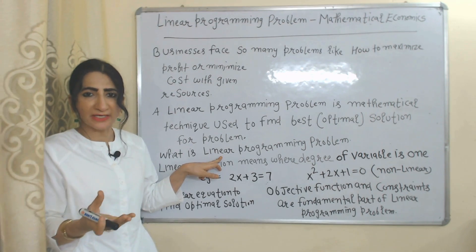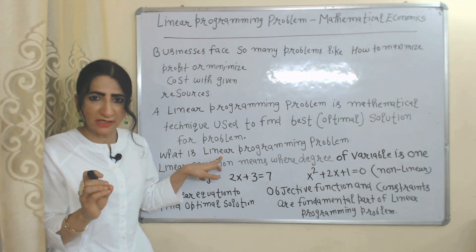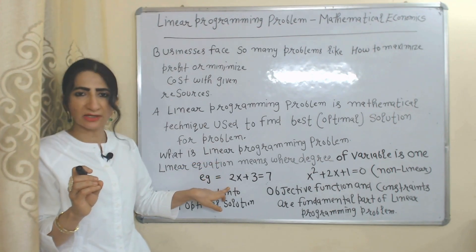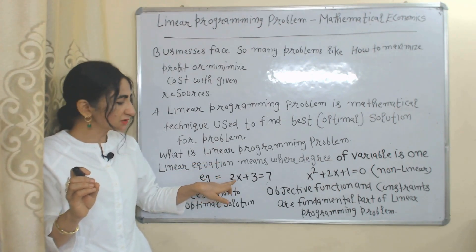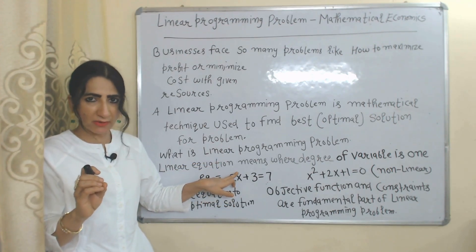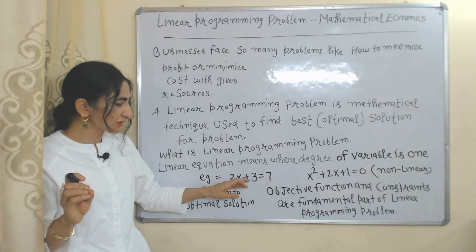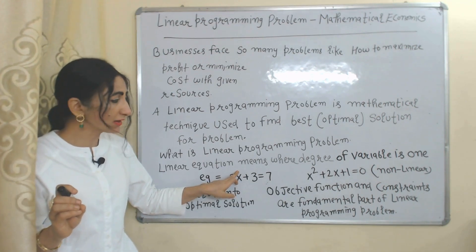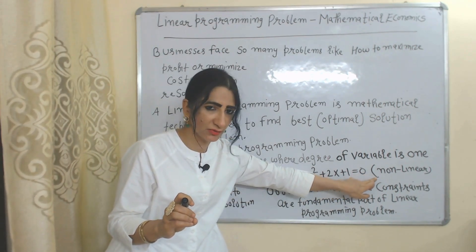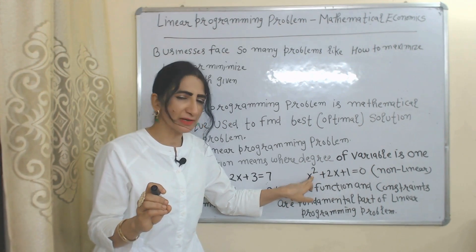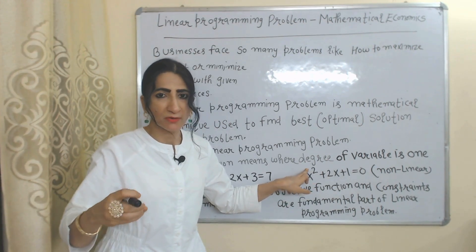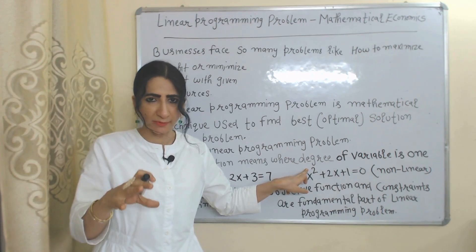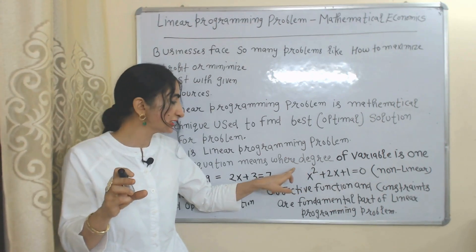While finding the optimum solution through linear programming, we always use linear equations. A linear equation is one where variables always have power one — so this is a linear equation because x has power one. But this is a non-linear equation because variable x has power two. While finding the optimum solution through linear programming, we always use linear equations, not non-linear equations.